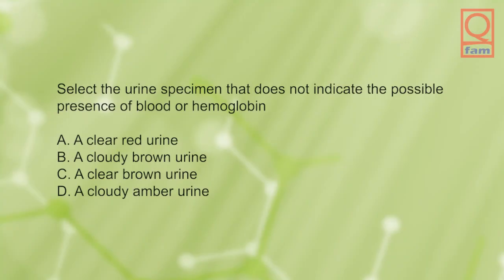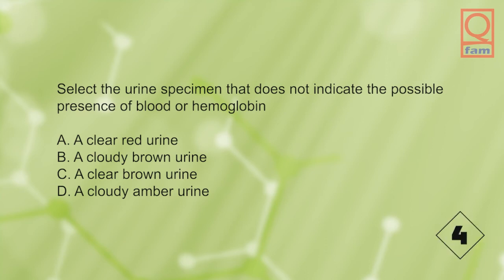Select the urine specimen that does not indicate the possible presence of blood or hemoglobin: A) a clear red urine, B) a cloudy brown urine, C) a clear brown urine, D) a cloudy amber urine. The answer is D, a cloudy amber urine.